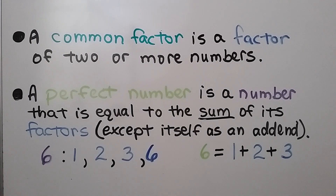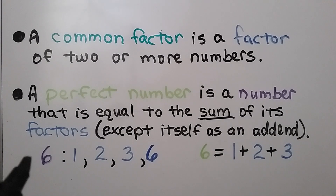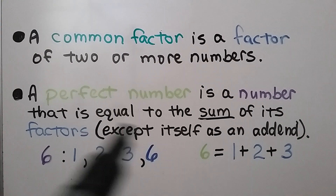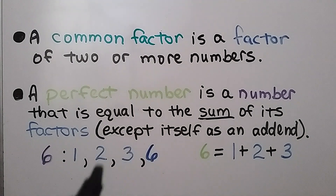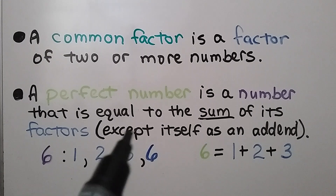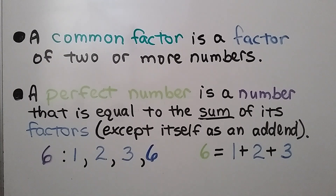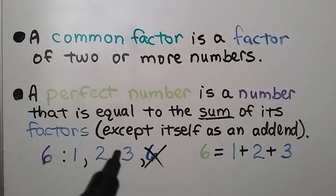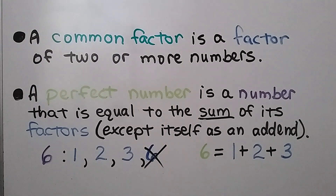A perfect number is a number that is equal to the sum of its factors, except itself as an addend. For 6, the factors are 1, 2, 3, and 6 — but we can't use the 6 itself. We add 1, 2, and 3, and that equals 6, so 6 is considered a perfect number. We'll talk about this more in a few minutes.